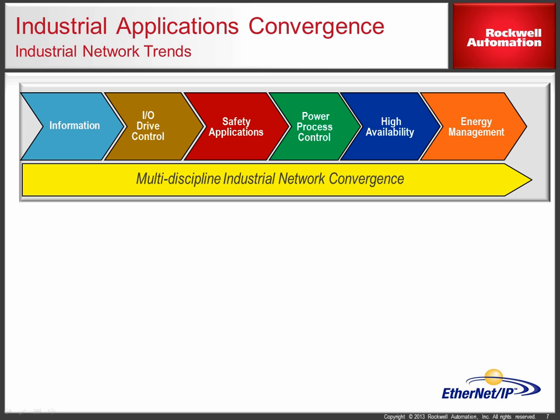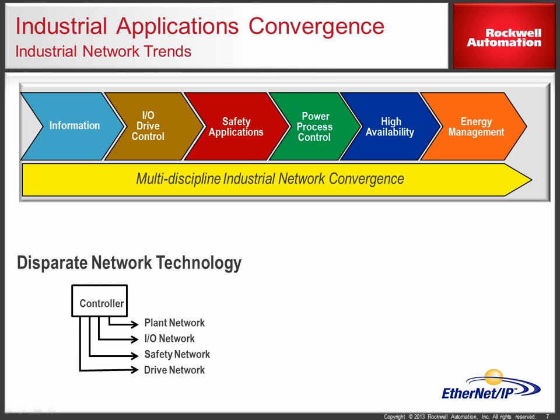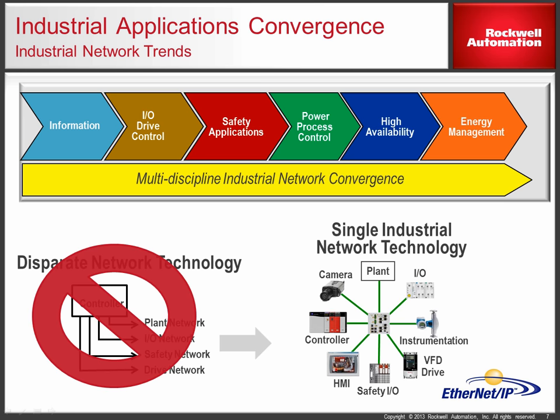Another way of looking at this is the traditional approach for controllers. In the past, a controller supported many disparate network technologies — a plant network, an IO network, a safety network, or a drive network — all with costs and assets to manage and maintain. The transition is to a single industrial network technology, converging all these different applications onto a single industrial network with a common network infrastructure for both industrial and non-industrial traffic.